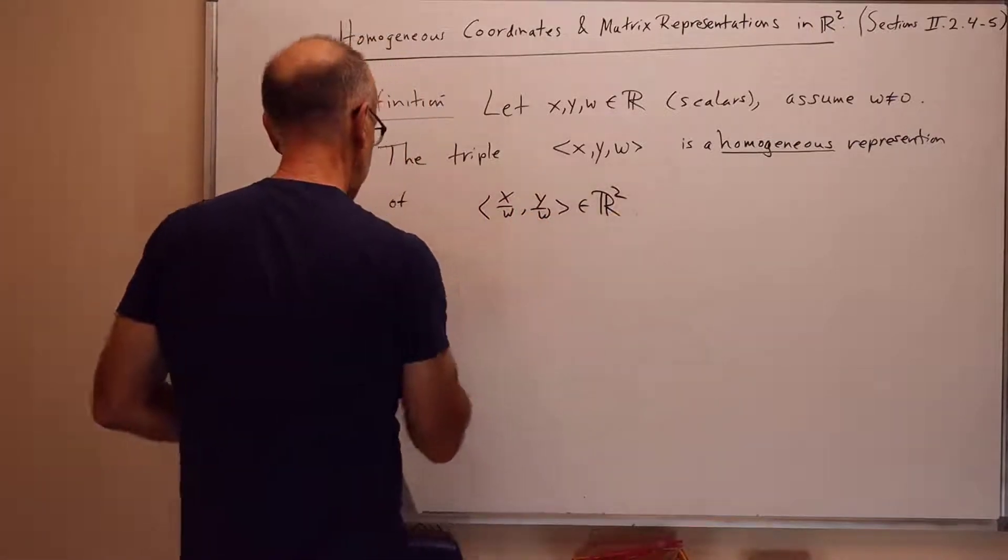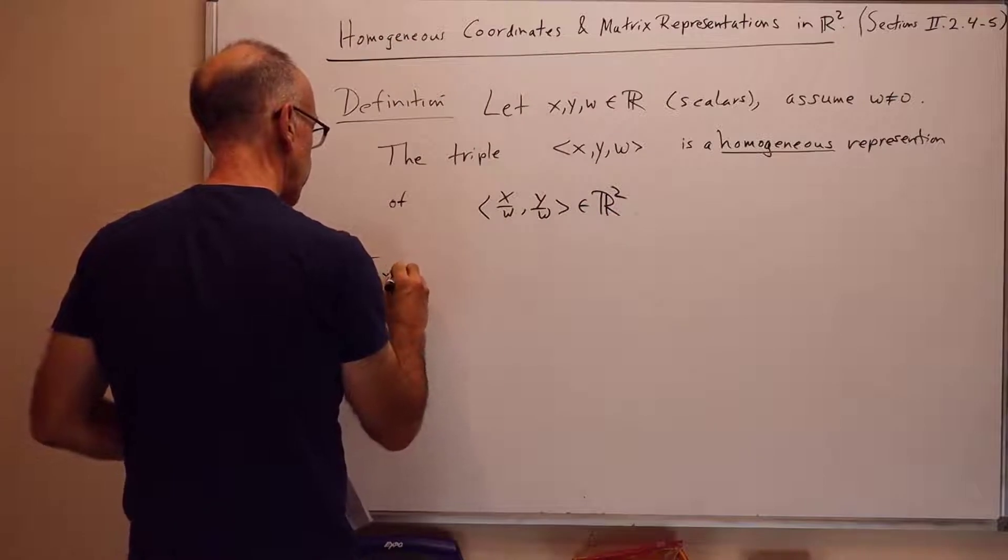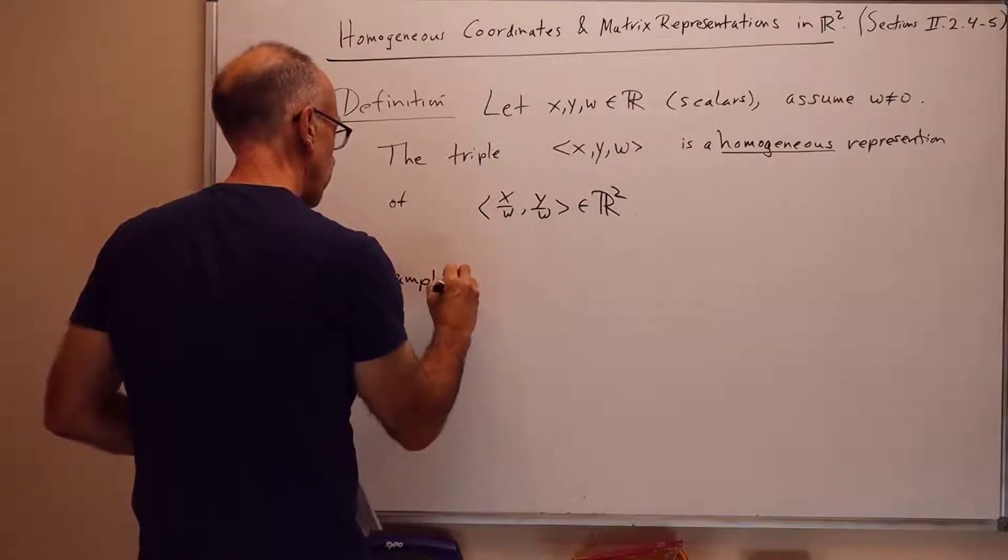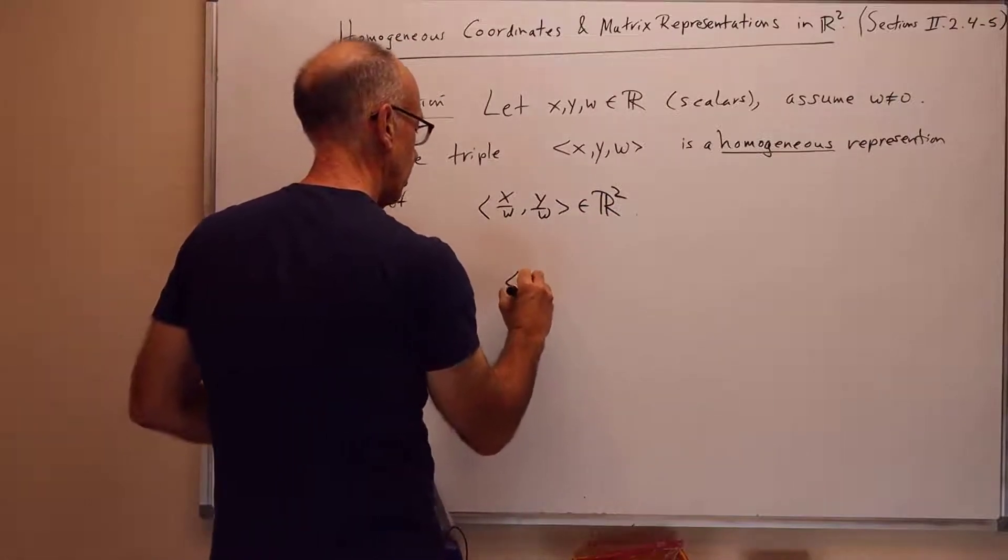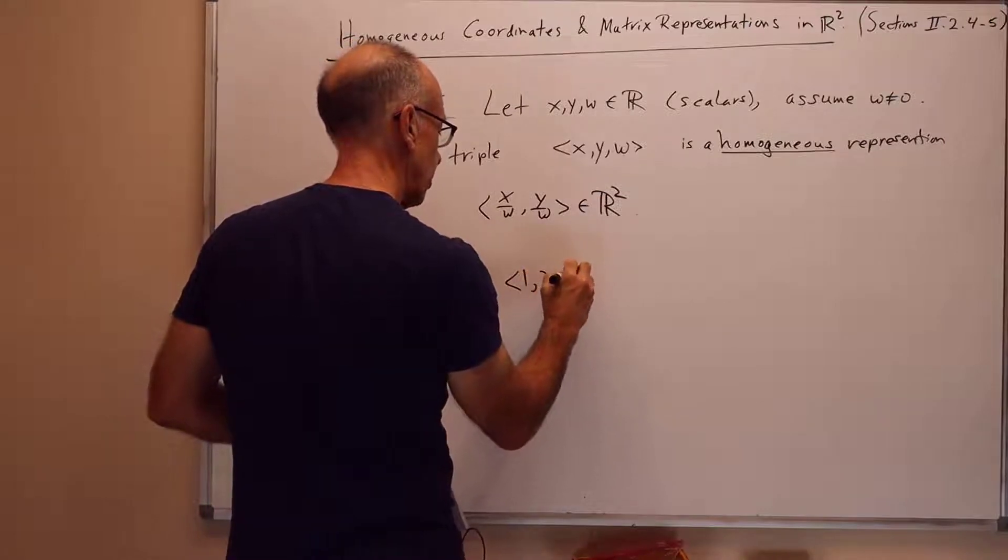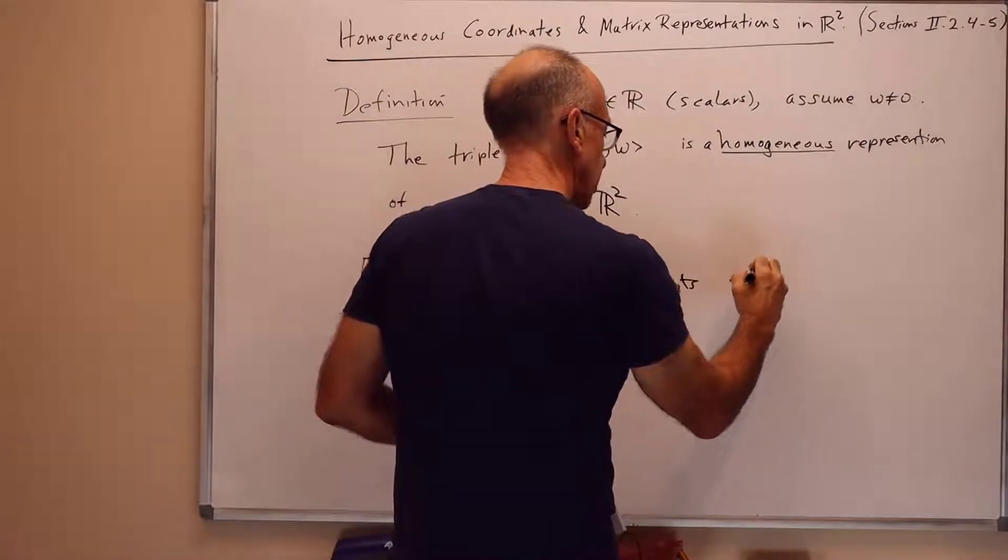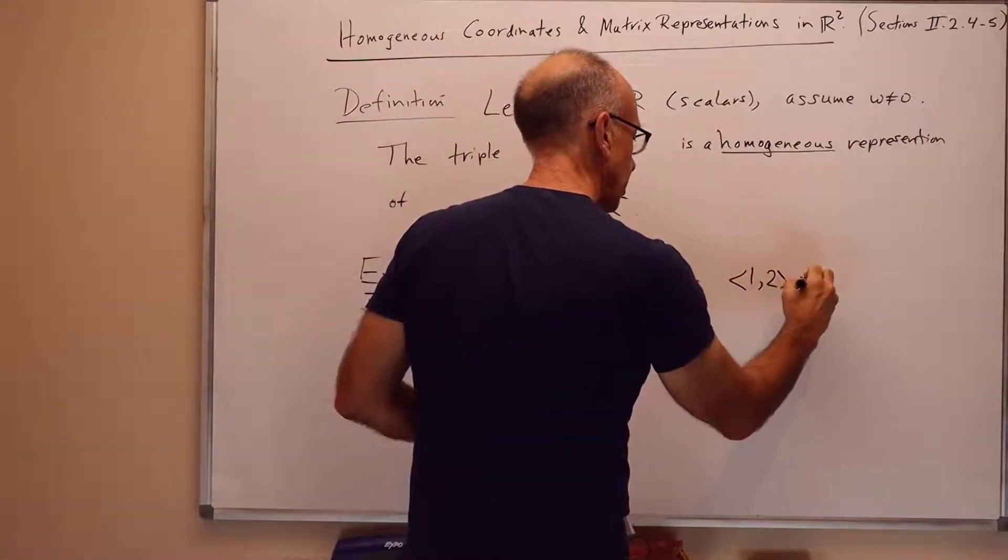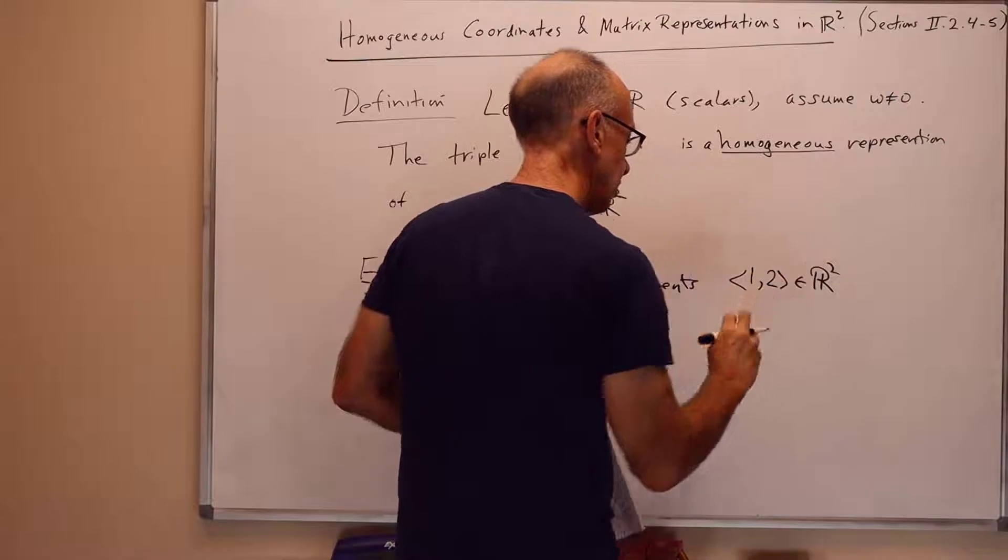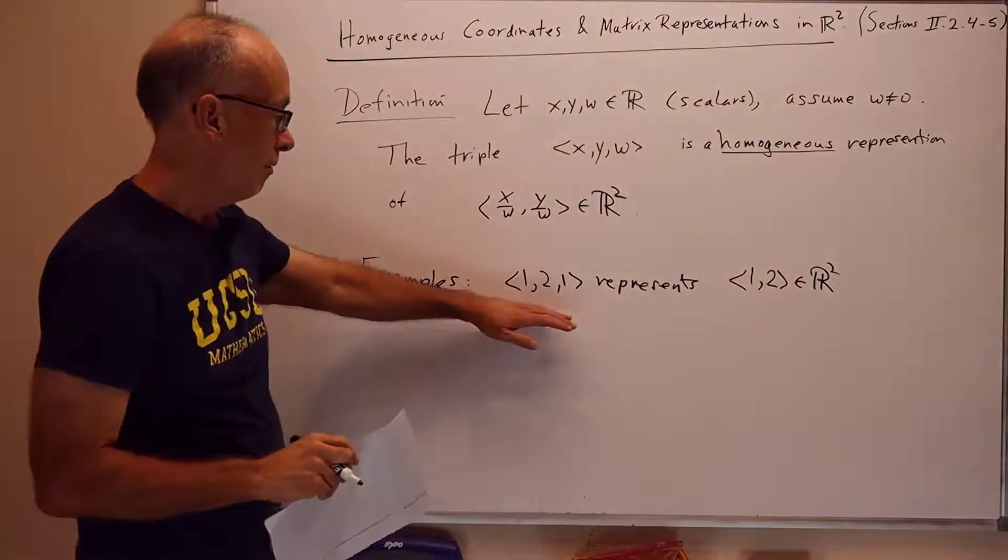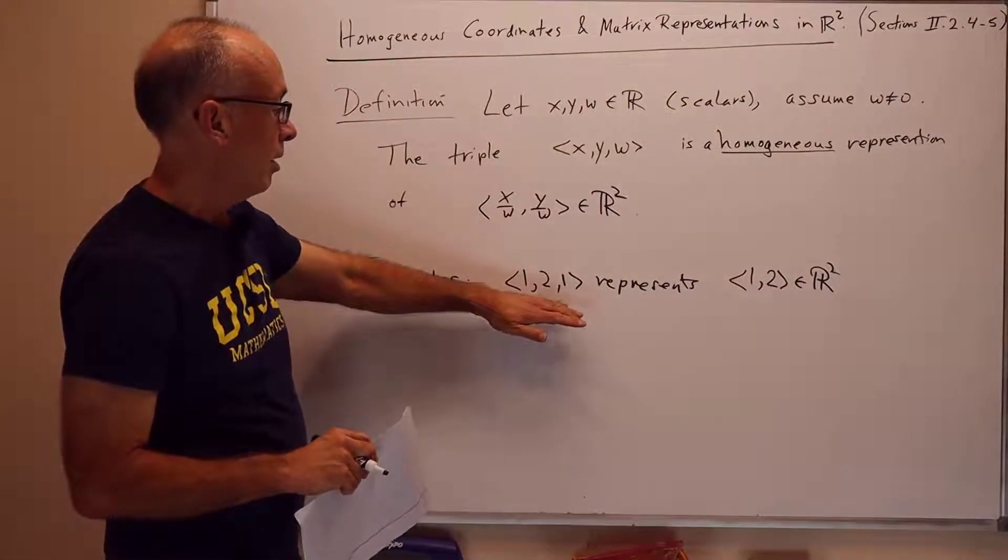The triple <1,2,1> represents 1, 2 in R2 as homogeneous coordinates, or homogeneous representation.